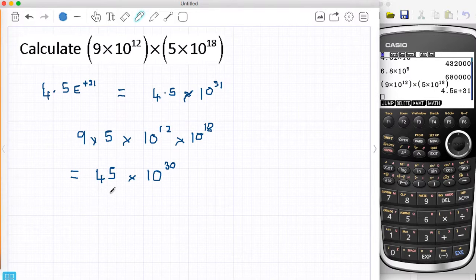So take 45, to get it between 1 and 10, I would write 4.5. Now that has had an effect on the index. I've moved it across one place, so this now becomes 10 to the power of 31, which we knew was the answer from my calculator anyway. But I've done that whole calculation, big numbers, without a calculator.